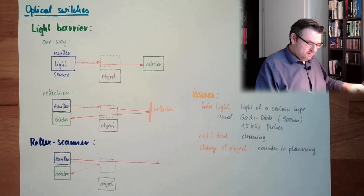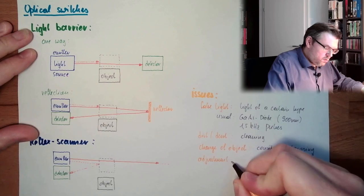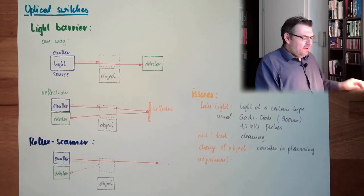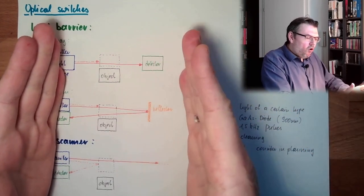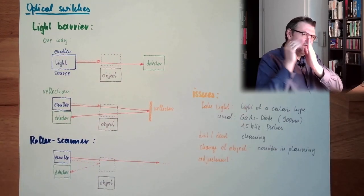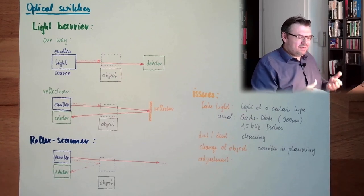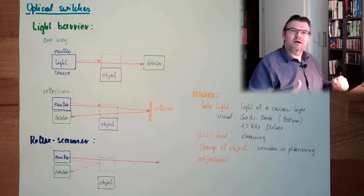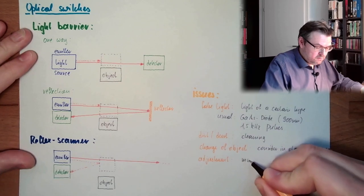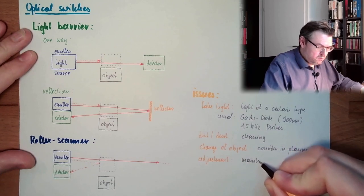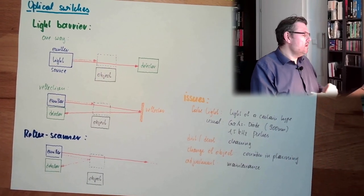That's the only countermeasure we can have. And adjustment, well, these are delicate. Sometimes it's even worse if there are longer ways. If it's just a short light barrier where you just detect some, it's usually no issue. But if they are getting longer, then adjustment comes critical. So maintain it. That's the only way to deal with this issue.